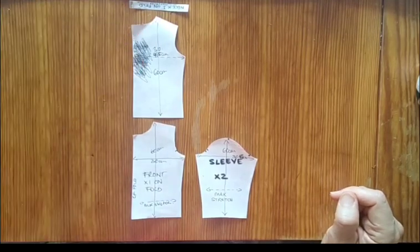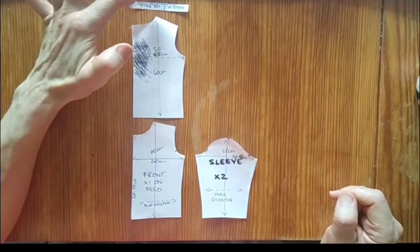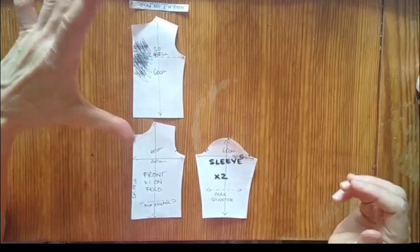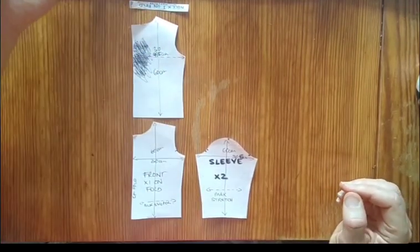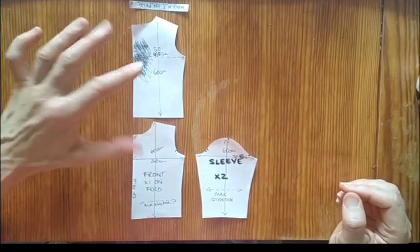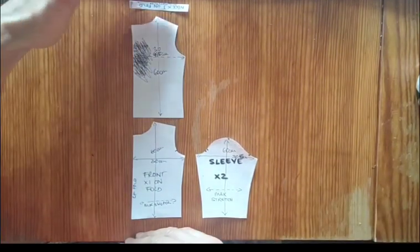Then I'd want to allow an extra 10 centimetres or so for shrinkage when I first wash the fabric before I cut out. But also if I'm going to pattern match, I might be adding another half metre or so. So then you can work out the amount you're going to need.